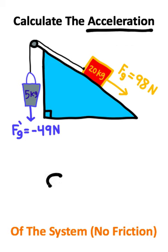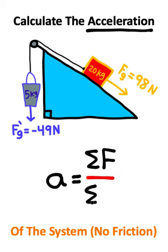Well, Newton's second law tells us that the acceleration of a system is equal to the total force of that system divided by the total mass.